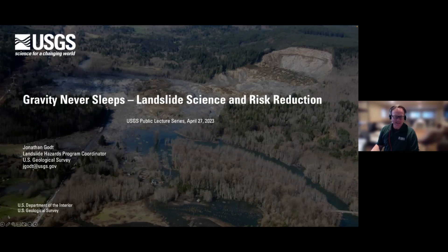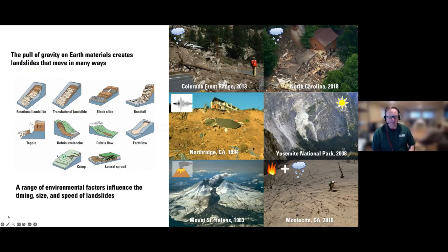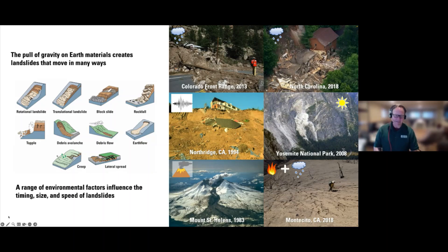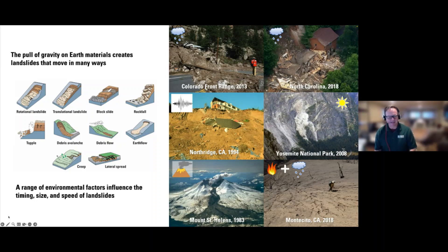To begin, I'll talk about the kinds of landslides. The pull of gravity on earth materials creates landslides that move in many different ways. There's a schematic diagram of different types of landslides, and they're characterized in the USGS system by the materials involved and the style in which they move — a rockfall, for instance, is rock that falls. We're going to talk about a few of these in particular because they create damage and risk to things we care about: people, infrastructure, and other things.